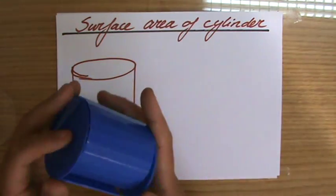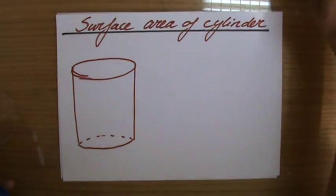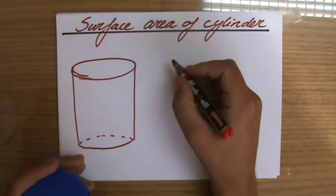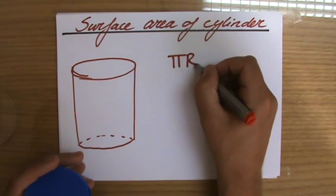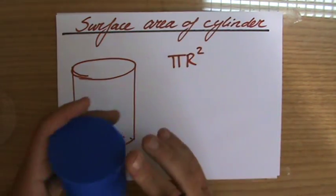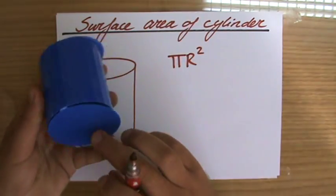So what is the area of a circle? Well, that is pi r squared. But I have how many of them? I have two of them.